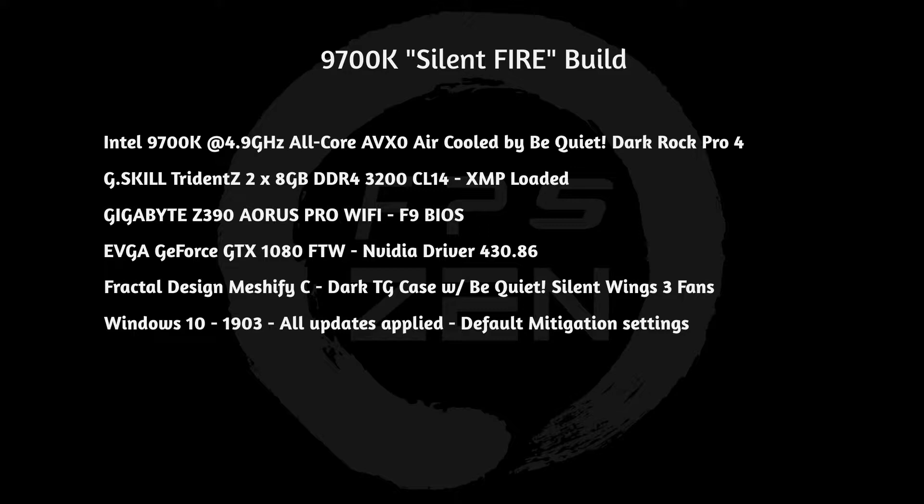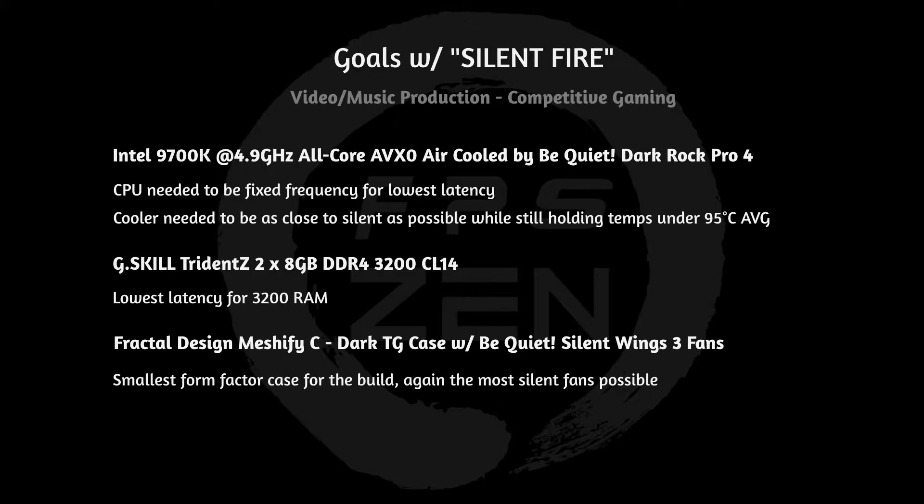I wanted to share my goals with this build. It was made for video and music production as well as competitive gaming. I selected the Intel 9700k because I wanted a really fast, fixed frequency processor — in this case 4.9 GHz on all cores all the time, with an AVX offset of zero, keeping it at that same frequency even when AVX instructions are passed to it 100% of the time for the lowest latency.